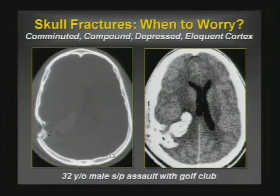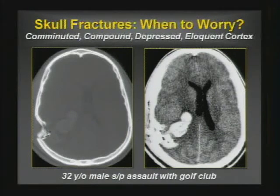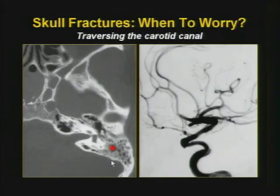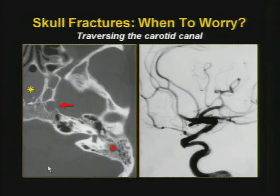In another case, the fracture is comminuted, compound, depressed, and overlying the sensorimotor cortex with gas present — all concerning features. Opacification of the mastoid air cells is the easiest way to identify a temporal bone fracture: whenever you see asymmetric opacification of the mastoid air cells, look for a temporal bone fracture. Similarly, blood in the sphenoid sinus should prompt a search for a skull base fracture. Here the internal carotid canal is disrupted and the clivus has a fracture going right through it.